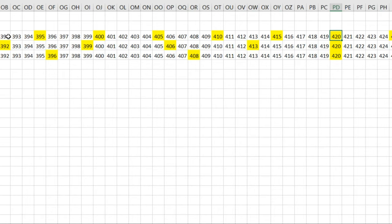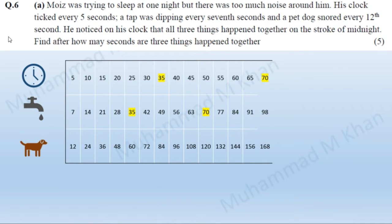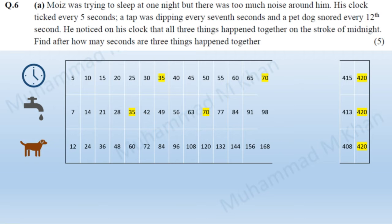So 420 is the least common multiple of 5, 7, and 12. But it is a very laborious job to list all the numbers, highlight the multiples of every number, and then find the common multiple. How do we do it mathematically when you are sitting in an examination hall?